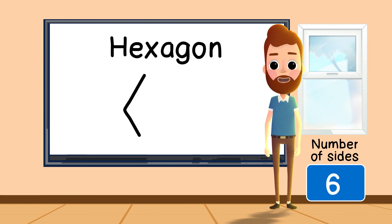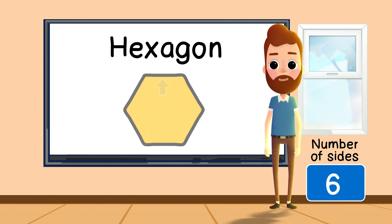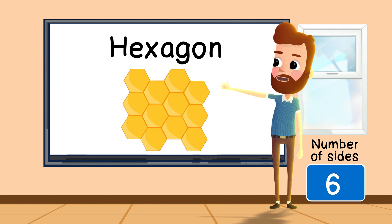A six-sided shape is called a hexagon. Side one, side two, side three, side four, side five, and side six. A honeycomb is made up of many hexagon shapes.